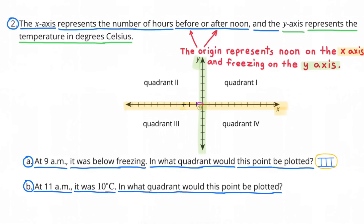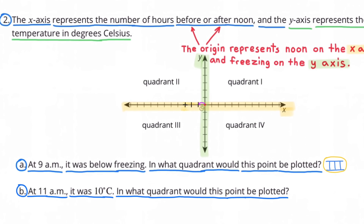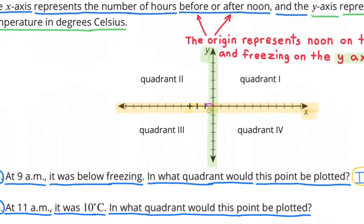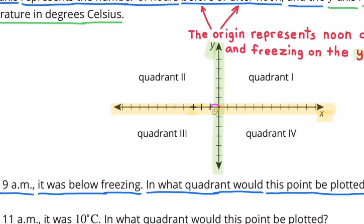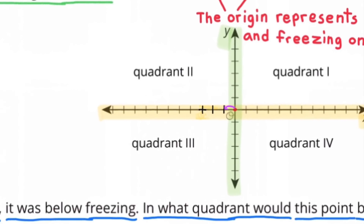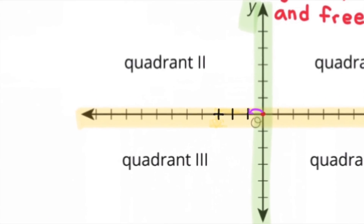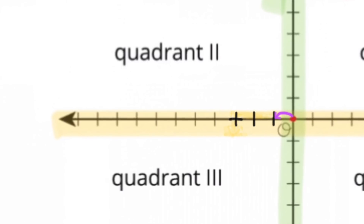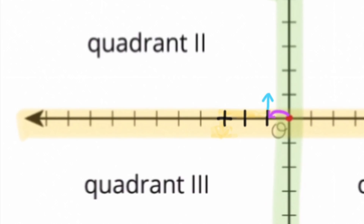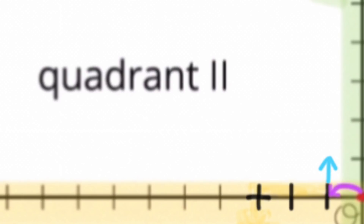B. At 11 a.m., it was 10 degrees Celsius. In what quadrant would this point be plotted? 11 a.m. is still before noon, so we'd move to the left on the horizontal axis. 10 degrees Celsius is above freezing since the freezing point for Celsius is 0 degrees, so we'd move up the y-axis. That would put us in Quadrant 2.